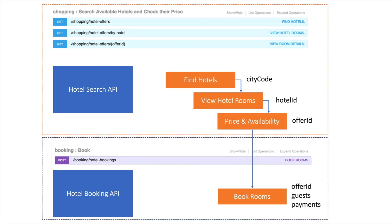First, you want to find the list of hotels available in a specific city or area. That's what the Find Hotel endpoint is for — the first endpoint. You give a city code or an area and you can search for all hotels available in that specific area. This API comes with a lot of parameters and filtering, allowing you to find hotels for specific dates or specific hotel chains. The response gives you the list of all hotels available, and for each hotel you get the cheapest room available.